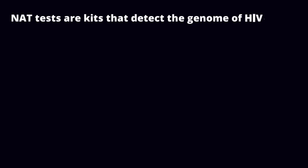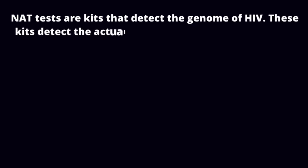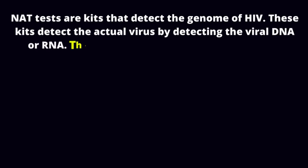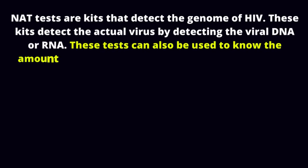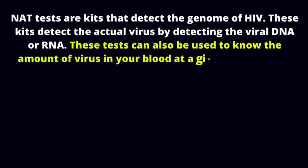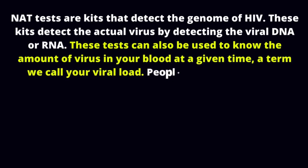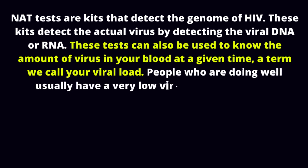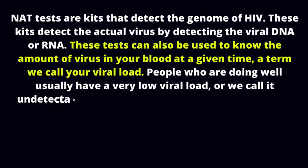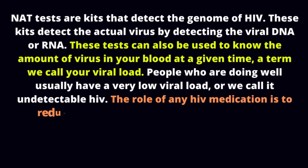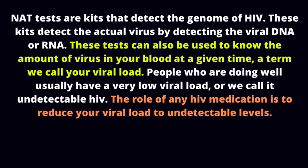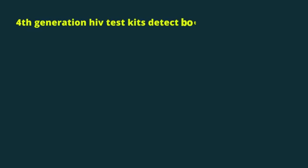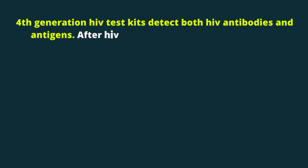Question: What do HIV test kits detect? NAT tests are kits that detect the genome of HIV. These kits detect the actual virus by detecting the viral DNA or RNA. These tests can also be used to measure the amount of virus in your blood at a given time — a term called your viral load. People who are doing well usually have a very low viral load, or what we call undetectable HIV. The role of any HIV medication is to reduce your viral load to undetectable levels.